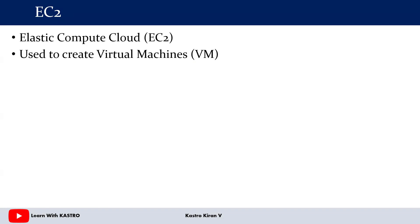In real-time scenarios, we used to have physical servers. Nowadays, once cloud computing came into the market, people started shifting their resources to the cloud domain. In order to maintain servers in the cloud environment, we create servers in the cloud domain — those are called virtual machines. Virtual machines are the servers we create in the AWS Cloud. With respect to the AWS Cloud, we have this service known as EC2.